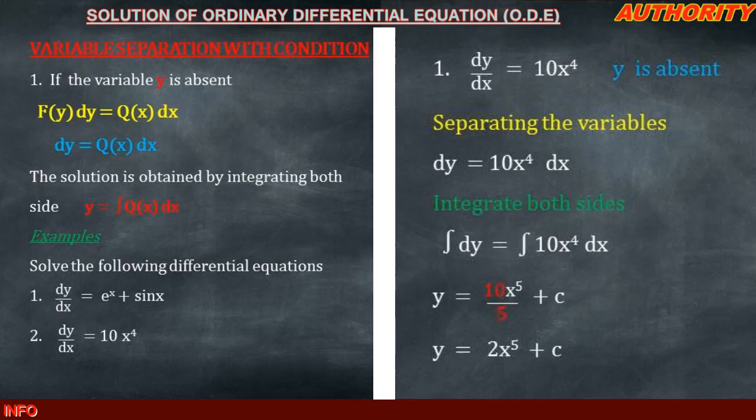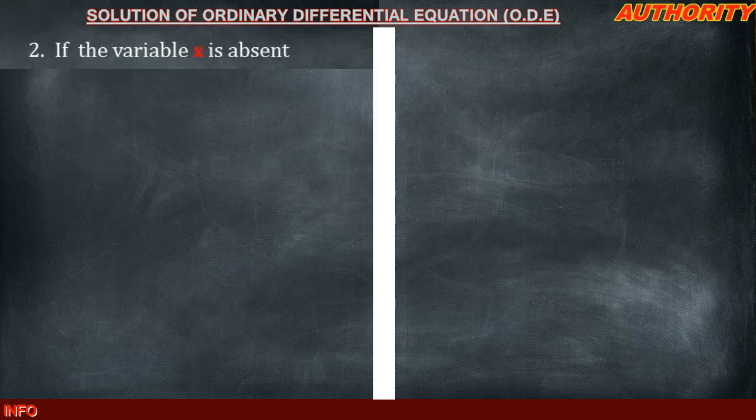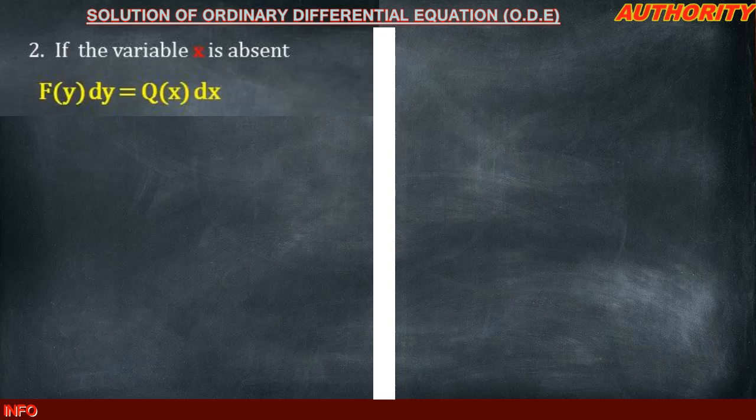The solution to the differential equation dy/dx equal to 10x^4 is y equal to 2x^5 plus c. Now let's take a look at the second condition. The second condition says: if the variable x is absent, how do we solve it? In variable separation, we write the equation as f(y) dy equal to q(x) dx.